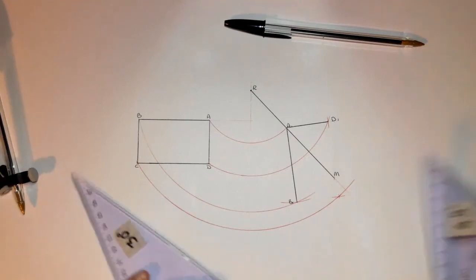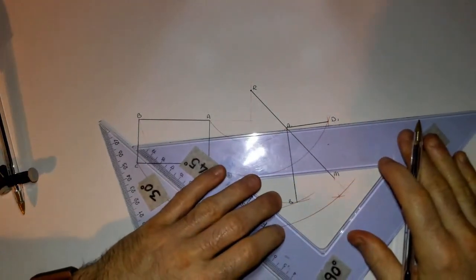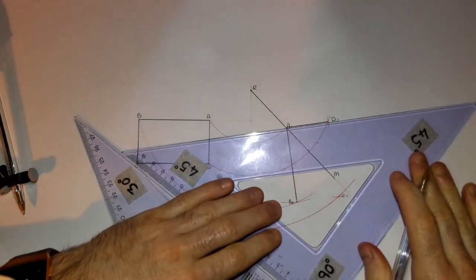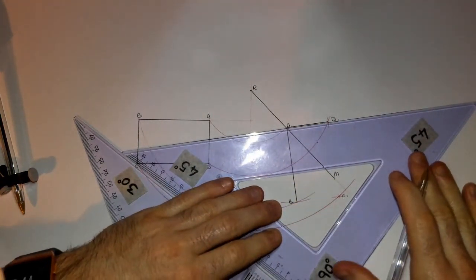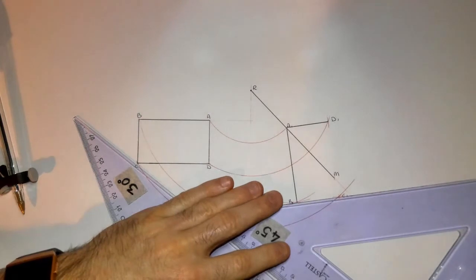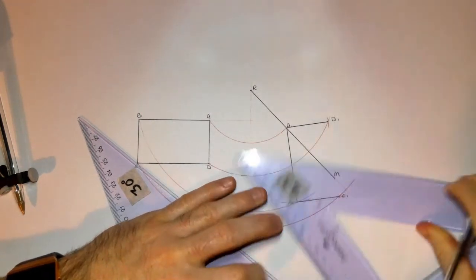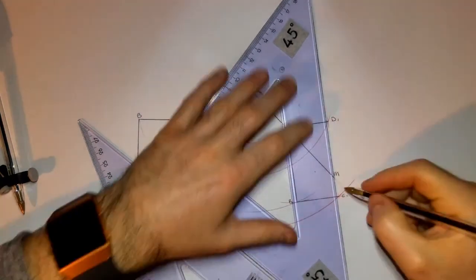So you can see there, now we have found C1. So I'm going to join A1 to D1. I know it should be parallel with that. I'm happy with that there. And then it should be perpendicular. I'm happy with that as well.